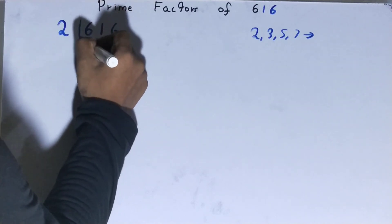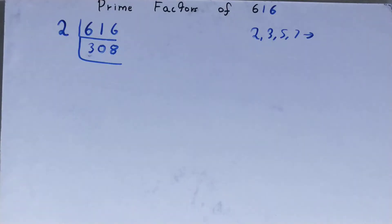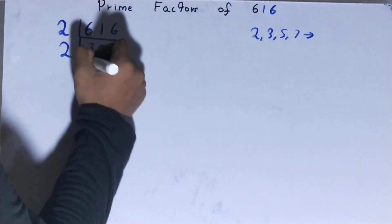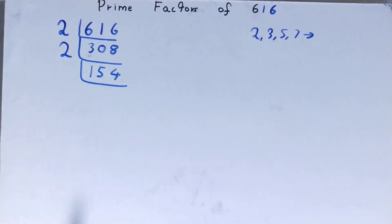Now, is 308 further divisible by 2? The answer is yes. So divide it and you will be left with 154. Now, is the number 154 further divisible by 2?